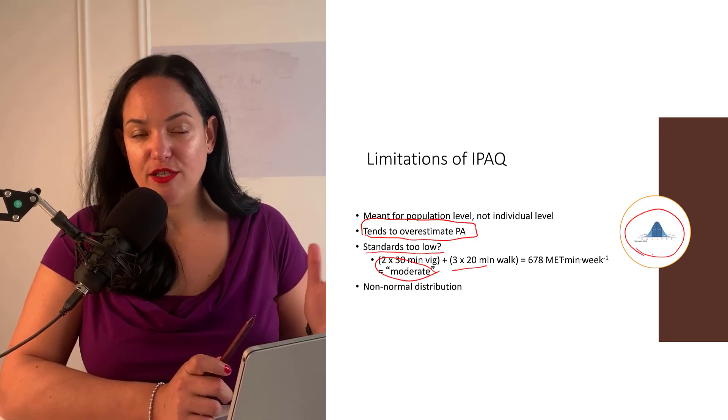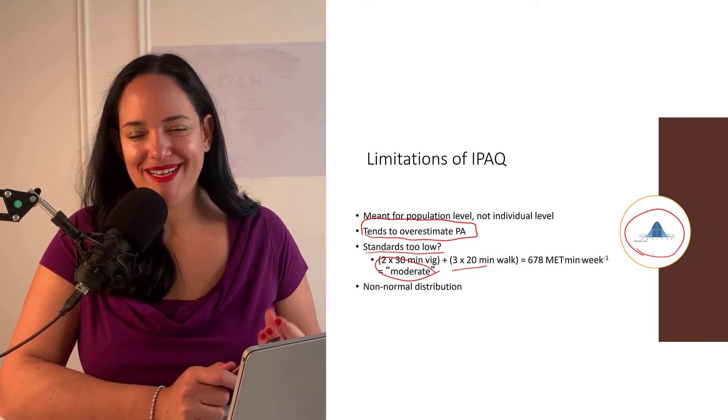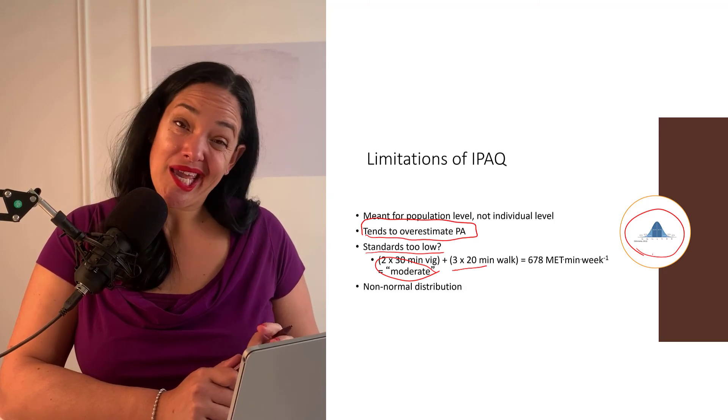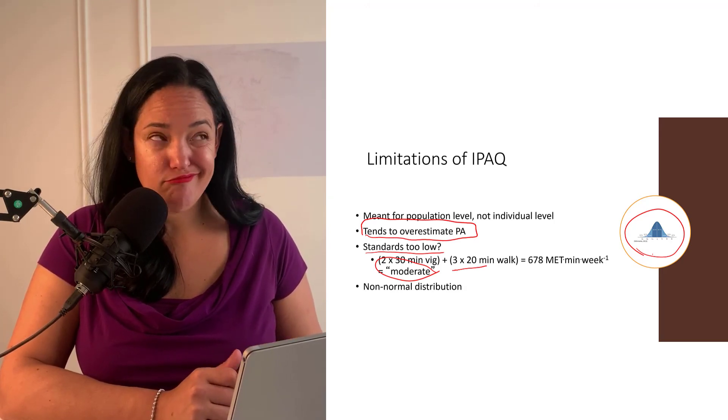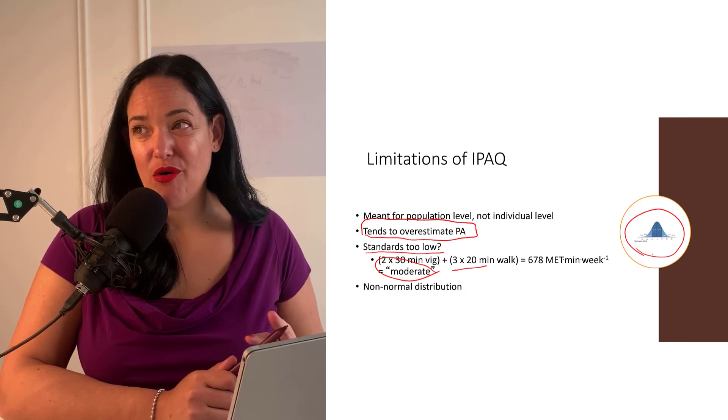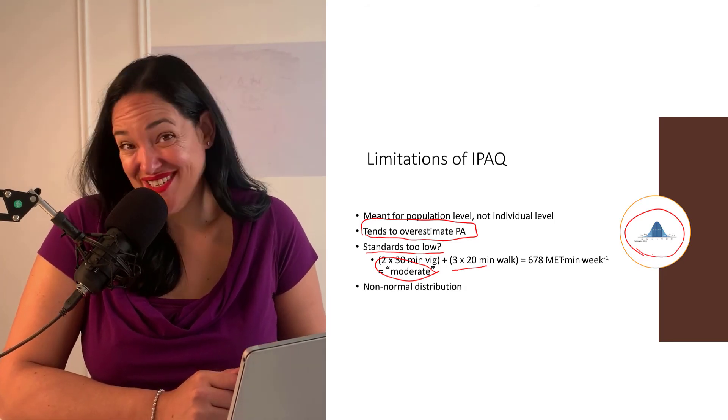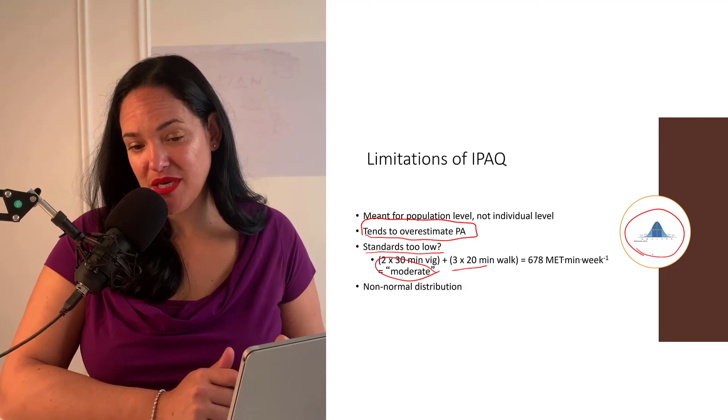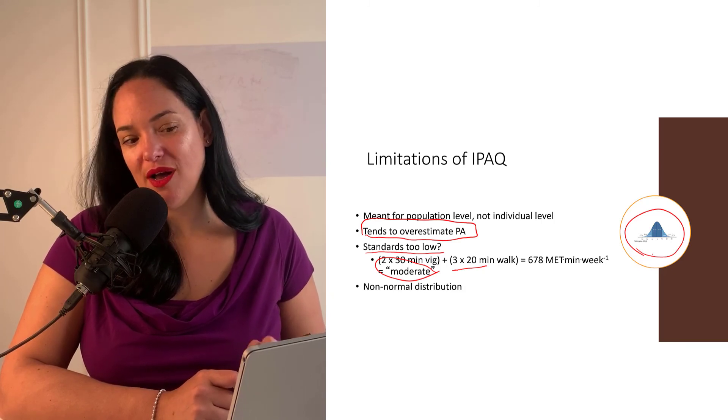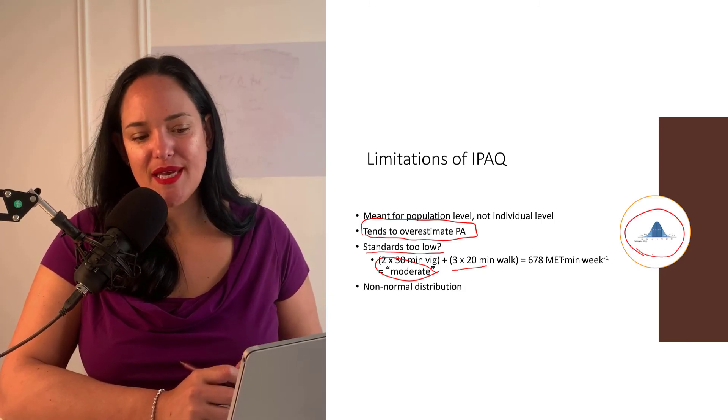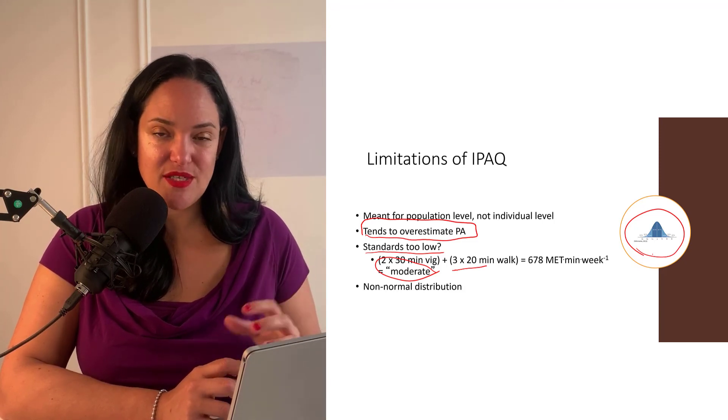And also the data tends to fit a non-normal distribution, whereas usually with physical activity it does fit a normal distribution. So again, the data is okay. It depends what you're using it for. We still use it in research, but there are better ways of measuring physical activity. This one's just easy. It's super easy to administer and it's quick and easy for someone to fill out as well. So that's why we keep using it, but the data isn't as robust as it could be.